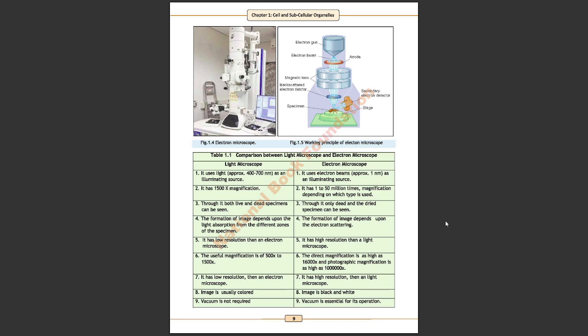We have to see table 1.1 comparison between light microscope and electron microscope. Light microscope uses light approximately 400 to 700 nanometer as an illuminating source, whereas in electron microscope electron beam approximately 1 nanometer is used as illuminating source. Next difference: it has 1500x magnification, it has 1 to 50 million times magnification. Through it both live and dead specimens can be seen. Through it only dead and dried specimen can be seen.